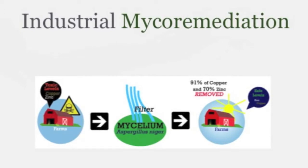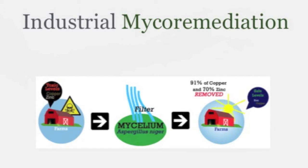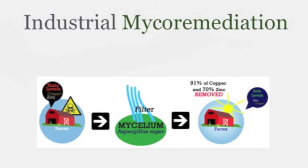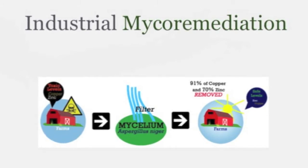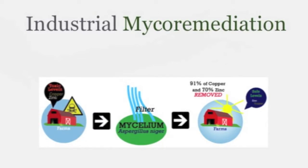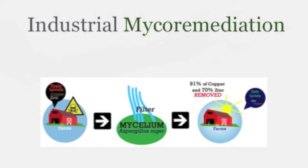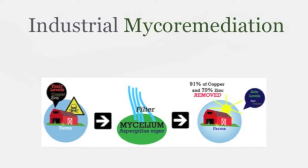Aspergillus niger was able to remove 91% of all copper from the runoff water of a swine farm. The same fungi was able to remove 70% of all zinc found in the wastewater over a 24-hour period. It was found that the fungi filtered out more metal when it was cultured under heavy metal conditions similar to those it would encounter in the swine farm.